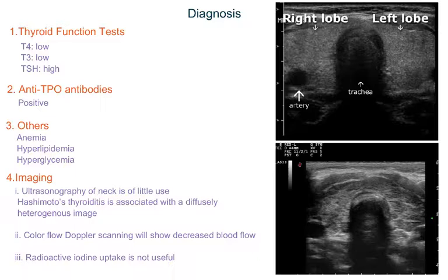In ladies who have menorrhagia, there will also be anemia, hyperlipidemia, and hyperglycemia, because thyroid hormones are responsible for fat metabolism and carbohydrate metabolism, which are reduced in hypothyroidism. Imaging of the thyroid gland is of little use in hypothyroidism, but some physicians do an ultrasound of the neck to check for any nodules or infiltrative disease.